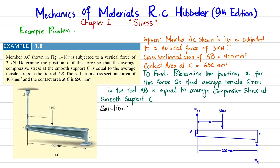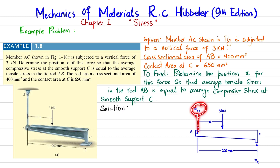Let's start with the solution. First, we remove the tie rod and the reaction force at C and draw the free body diagram. The tie rod AB is in tension, so it exerts a vertical force upward on member AC, represented as FAB. Point C is in compression, so the support applies a vertical force FC upward on the member. Three unknowns are: FAB, FC, and X, which we will find using equations of equilibrium.